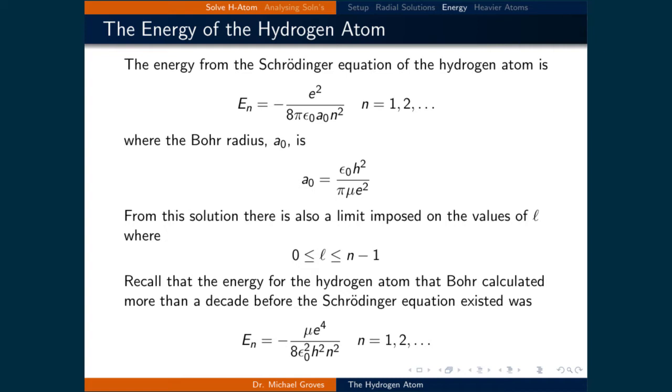This is exactly the same as the value found above from the Schrödinger equation. This is a remarkable result given that the Bohr model of the hydrogen atom is semi-classical and that quantization had to be imposed. For the Schrödinger equation solution, however, quantization is a natural result.